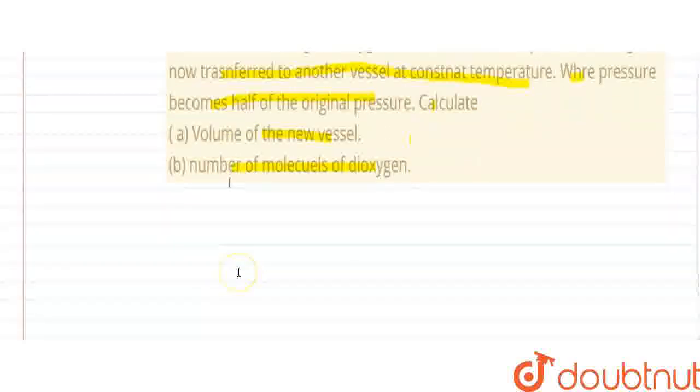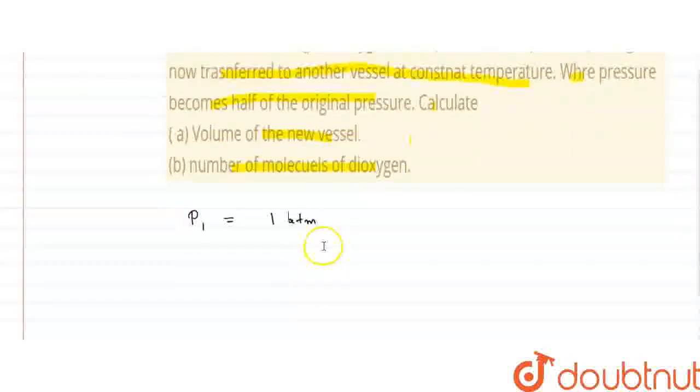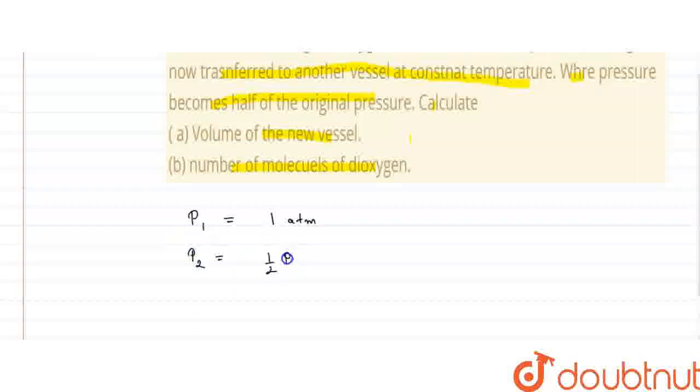So, we have been given that the pressure initially, P1, is 1 atm. And then, it is transferred to a new vessel, where the pressure is now P2, and it is half times P1. So, it will be 0.5 atmosphere.